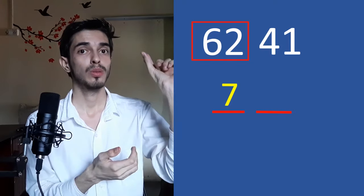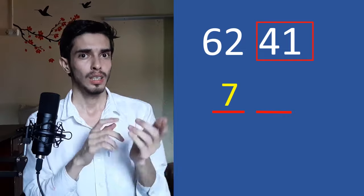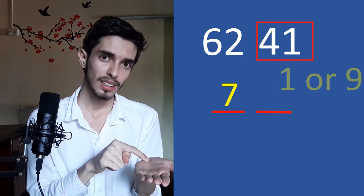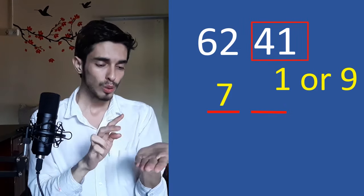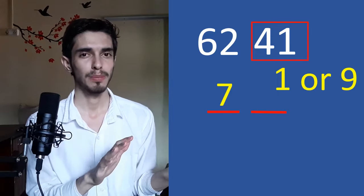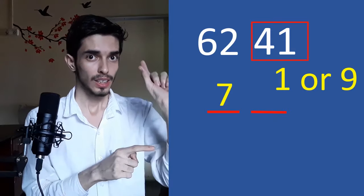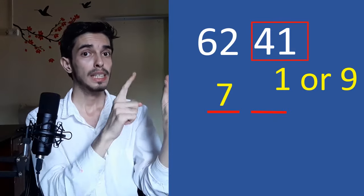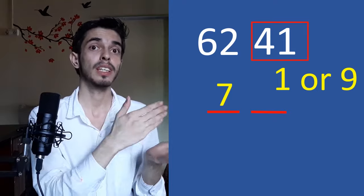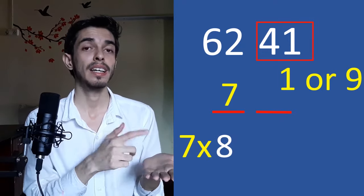Now, step 2 is focus on this 41. See, this number is ending in 1. So, the second digit is either 1 or 9. Now, how to choose between these two? This is our task. So, this is really simple to do. See, we already know that 7 is the first digit. Now, take this digit and multiply it with this same digit plus 1. That is 7 into 7 plus 1. That is 7 into 8. Eight sevens are 56.